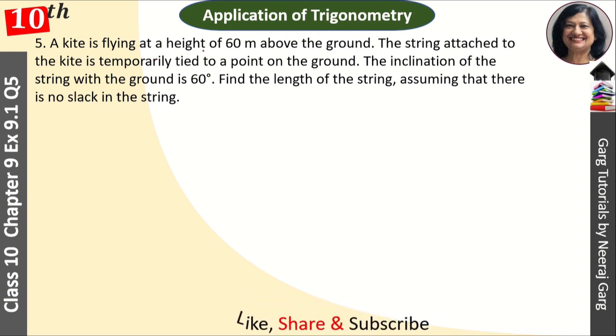A kite is flying at a height of 60 meters above the ground. The string attached to the kite is temporarily tied to a point on the ground. The inclination of the string with the ground is 60 degrees. Find the length of the string assuming that there is no slack in the string.